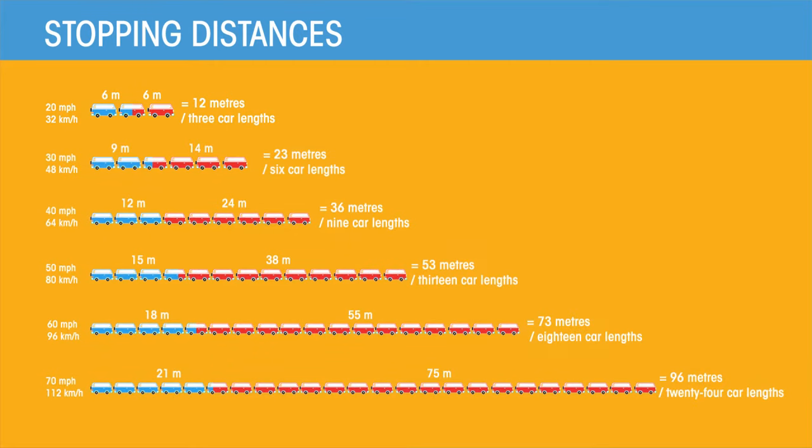So you'd think then, that double the speed to 64 km per hour, the stopping distance would also double to 24 meters. But no, it's much more. It actually takes on average 36 meters, three times what it would have at 32 km per hour.